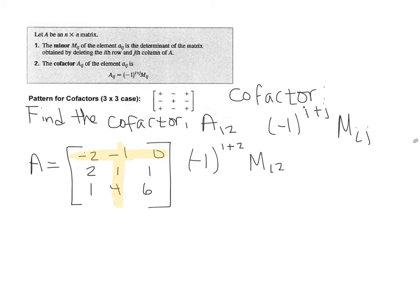So we know then this is going to be negative 1 to the third power, which is negative 1 times the minor, M1-2. So all we've got to do is find the minor now. So let's just find the minor.